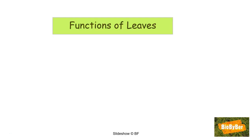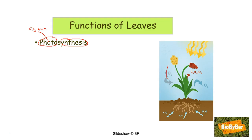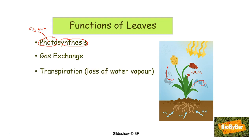Let's understand the organization of parts of the flowering plant by looking at leaves. The first function of a leaf is photosynthesis — the way green plants use light to make food. During photosynthesis, leaves take in carbon dioxide and give out oxygen. This is also gas exchange, the second function of leaves. The third function is transpiration — the loss of water vapor from the surface of a plant.